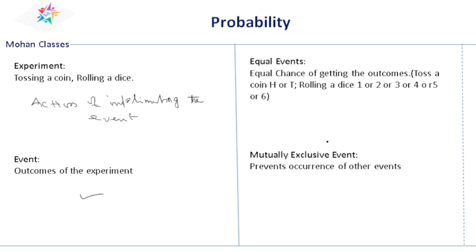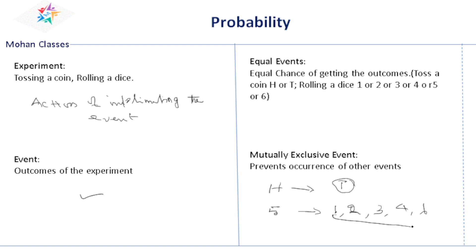What is a mutually exclusive event? A mutually exclusive event is nothing but — suppose if we are tossing a coin and you are getting head, then it prevents getting tail. So tail is the mutually exclusive event, because head has come so tail is not coming. Similarly, if you are rolling a dice and you are getting 5, it prevents getting 1 or 2 or 3 or 4 or 6. So this is called a mutually exclusive event.